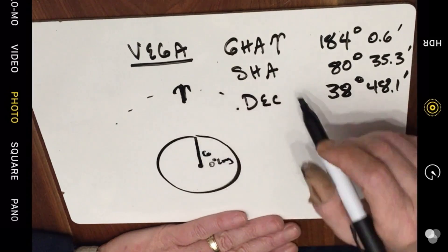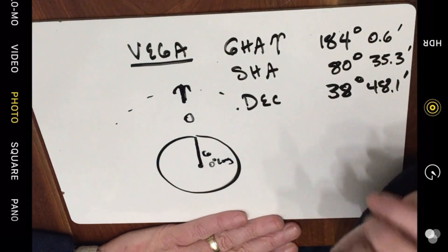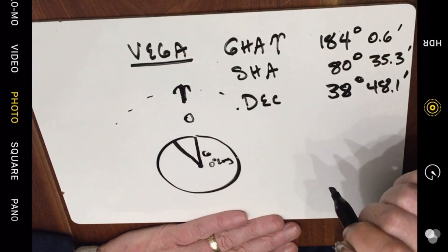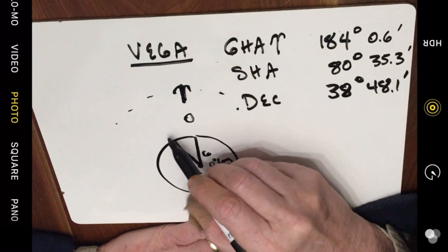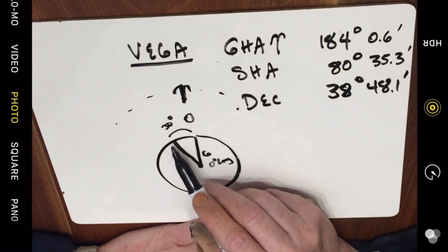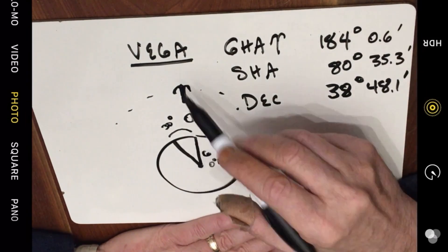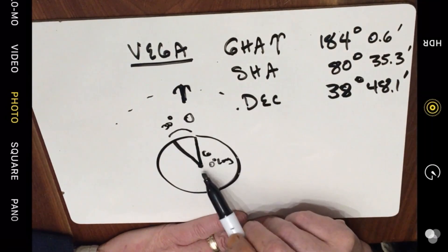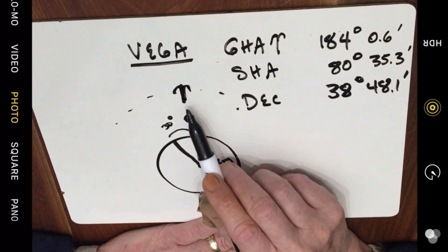In that case, the Greenwich Hour Angle to Aries would be zero. Now as the Earth rotates, two hours later we're going to be 30 degrees to the east. Our Greenwich Hour Angle to Aries will no longer be zero — it will now be 30 degrees. If we wait another two hours it'll be 60 degrees. What that does is orient the Earth to the celestial sphere, giving you the relationship between the prime meridian on Earth — the meridian of Greenwich — and Aries, which is the prime meridian of the celestial sphere.